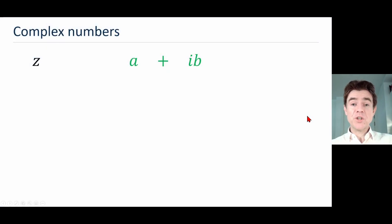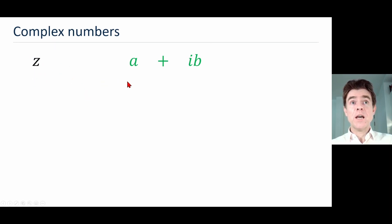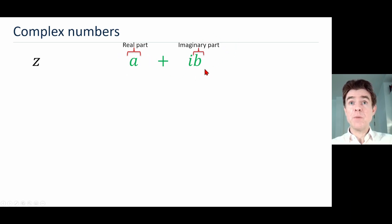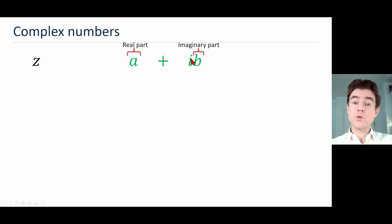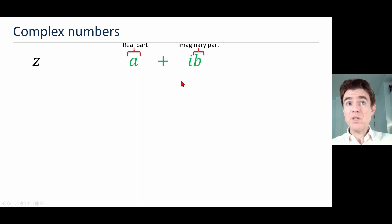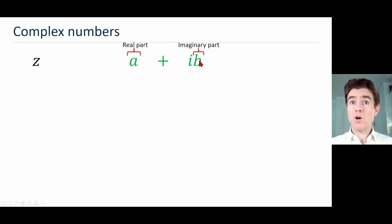To understand Euler's formula we need to understand a complex number. I'm using z as a complex number here, composed of a real part which I'll call a and an imaginary part which I'll call b. The imaginary part b is multiplied by i, which is the square root of minus one — the so-called imaginary unit. The imaginary part b and the real part a are both real numbers; it's just that the imaginary part b is multiplied by i.